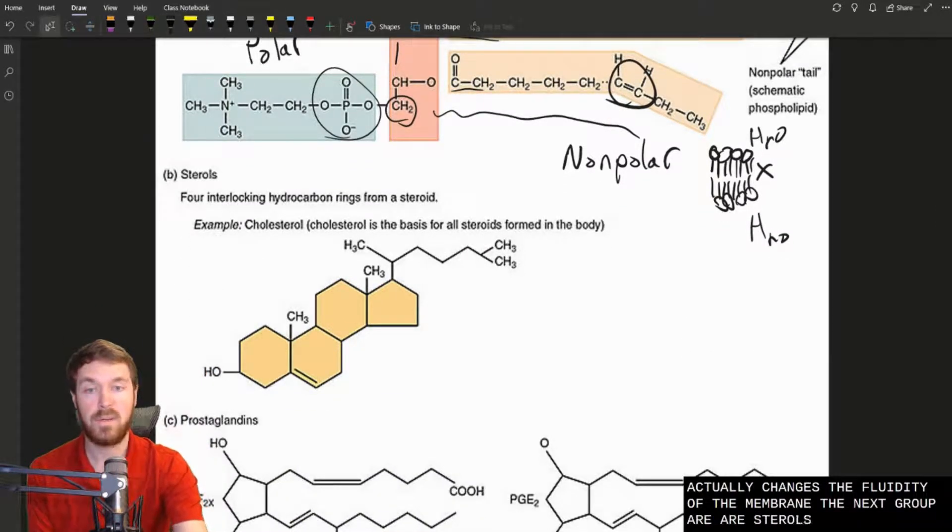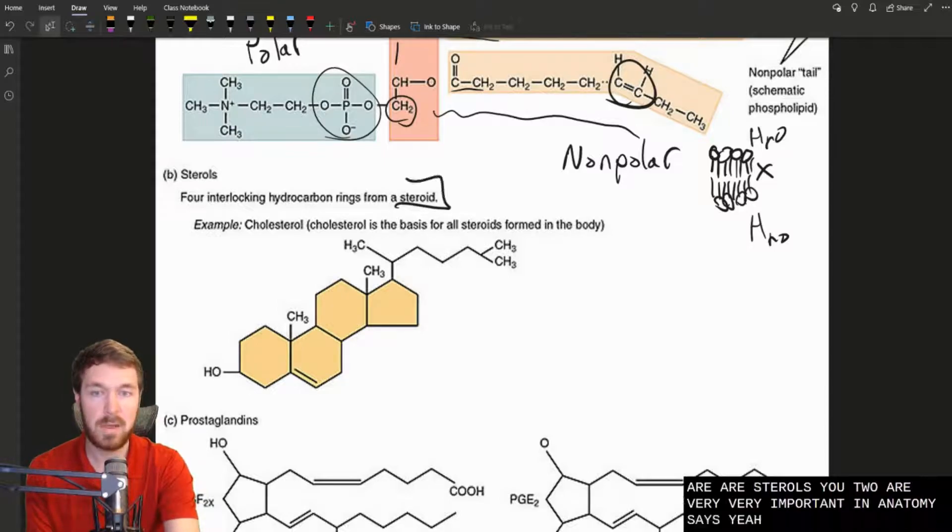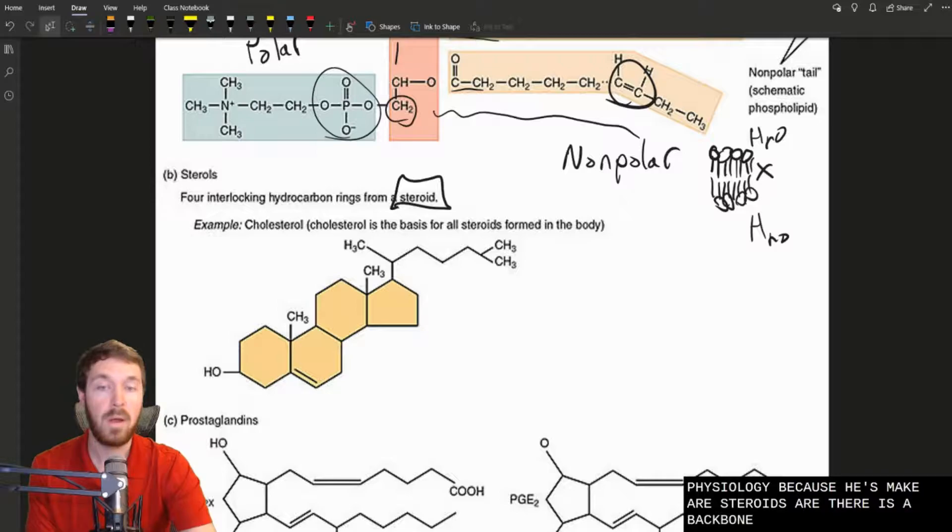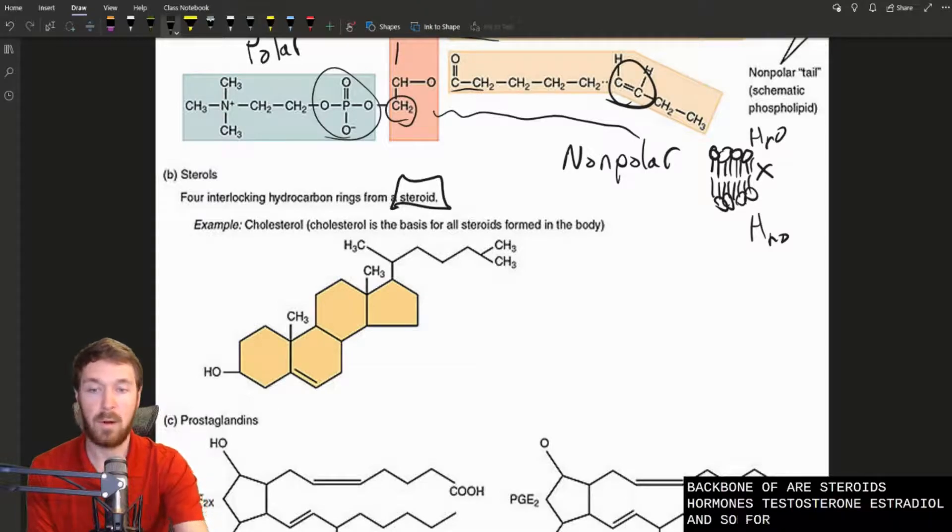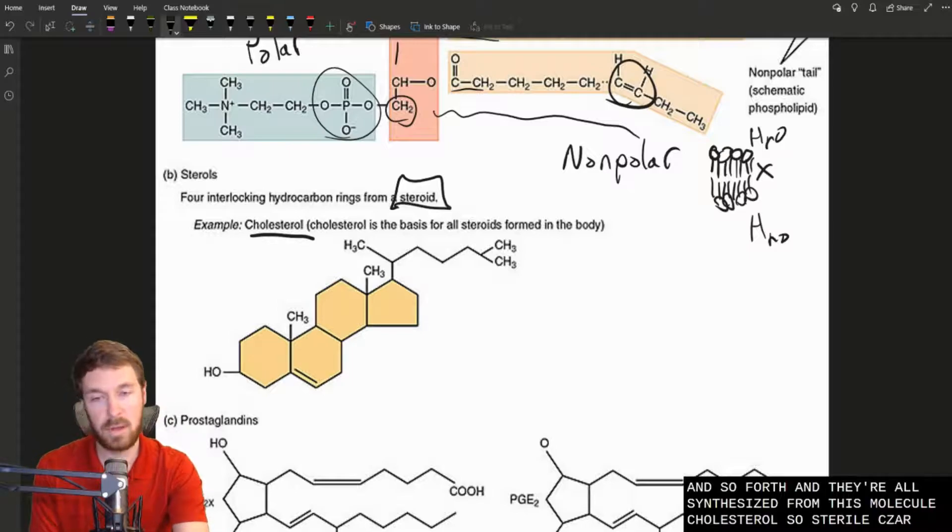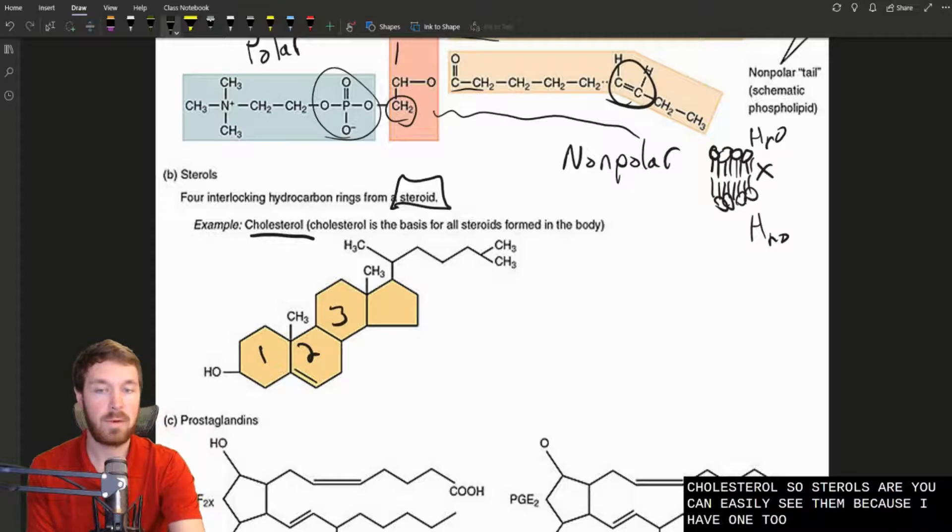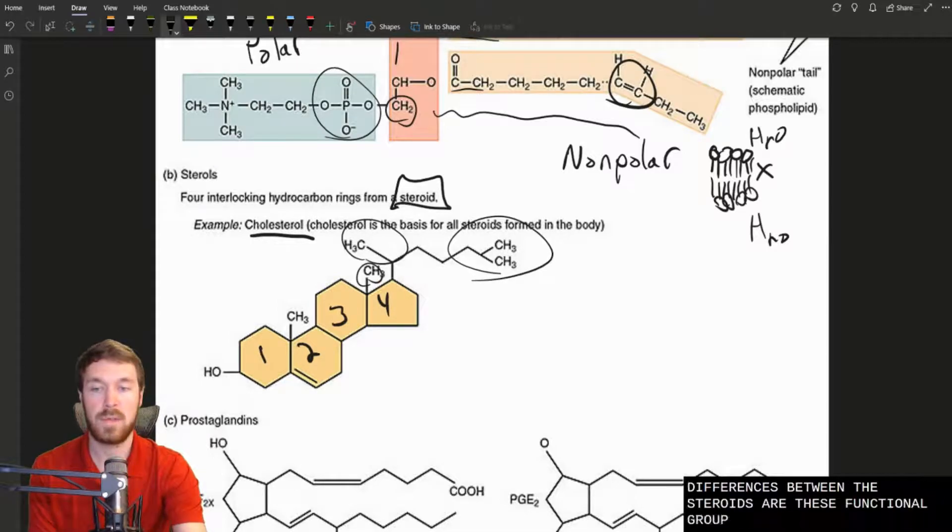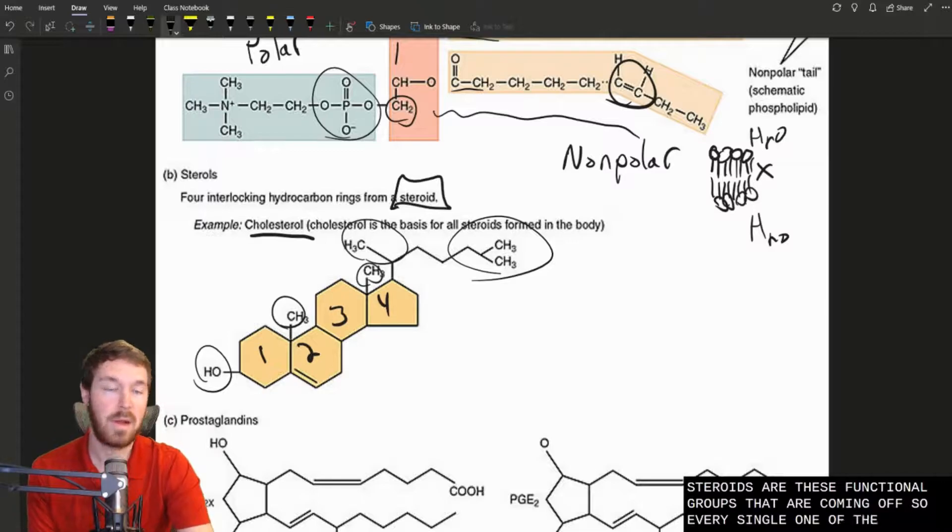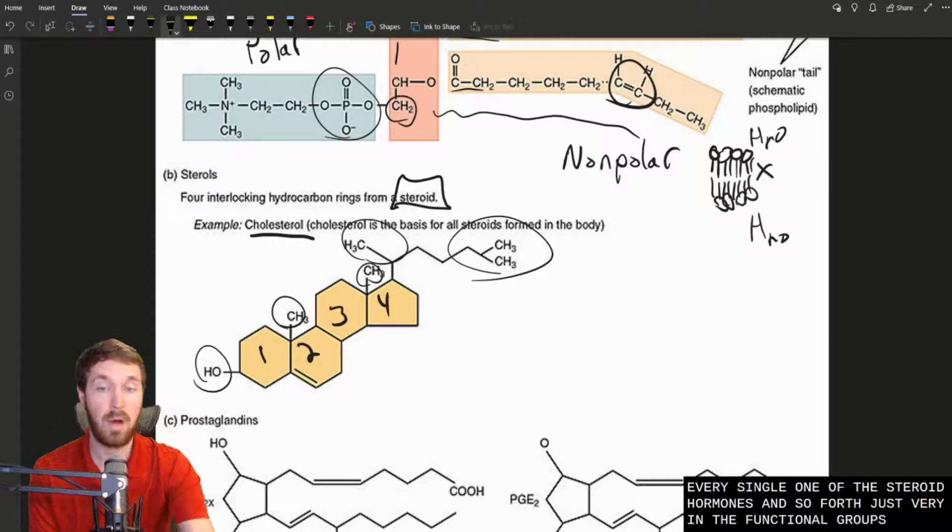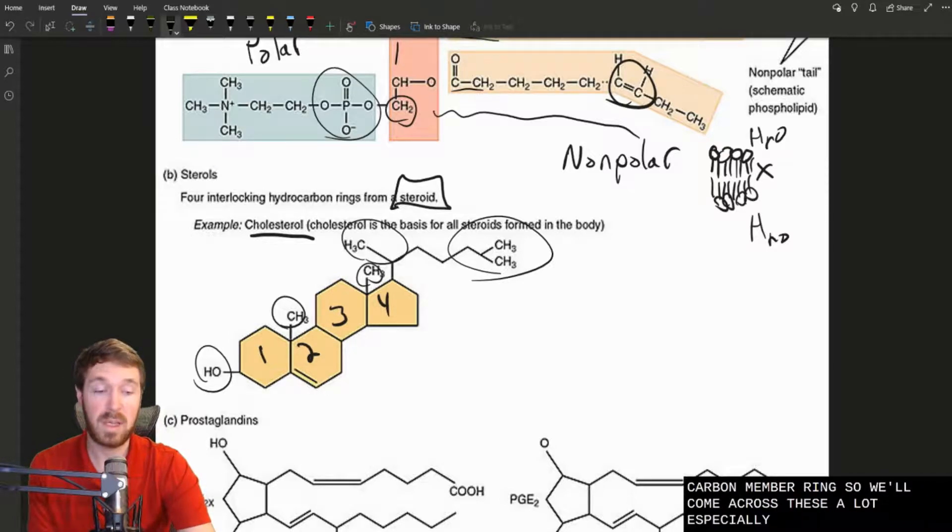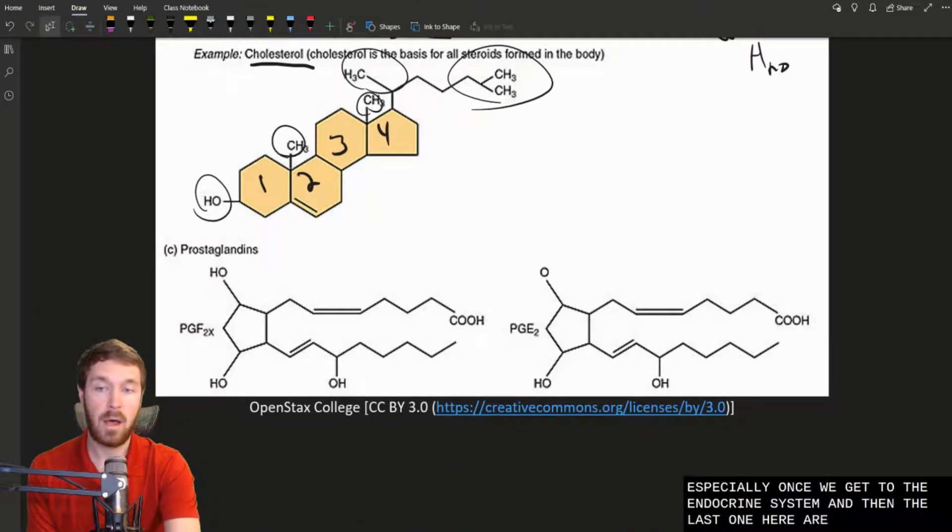The next group are our sterols. These are very important in anatomy and physiology because these make our steroids or they're the backbone of our steroids, our hormones. So testosterone, estradiol, and so forth. And they're all synthesized from this molecule, cholesterol. So sterols, you can easily see them because they have one, two, three, four carbon chains in their backbone. All the differences between the sterols are these functional groups that are coming off. So every single one of the steroid hormones and so forth just vary in the functional groups that come off of this four-fused carbon member ring. So we'll come across these a lot, especially once we get to the endocrine system.